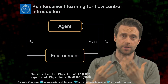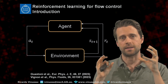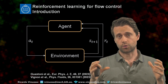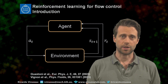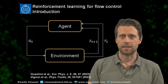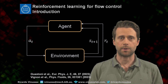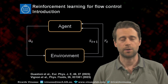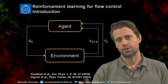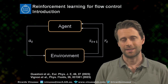Through trial and error the idea is to converge to a policy which, given the state of the system, gives us the optimal set of actions that will maximize the reward in the long term. We're going to focus on blowing and suction at the wall — injecting or removing momentum from the flow. This work is led by Luca Wastoni and published in the European Physics Journal E. For more information on reinforcement learning and new developments for flow control, check out the reference by Colin Vignon, which provides a complete review of where reinforcement learning is heading in the context of flow control.